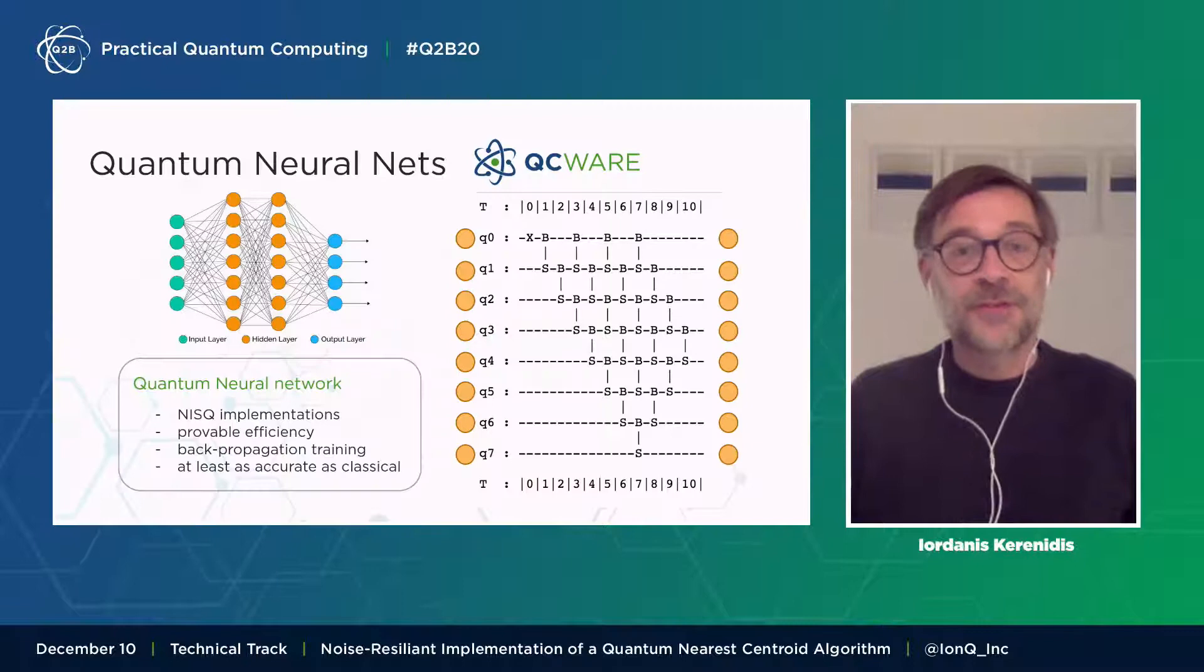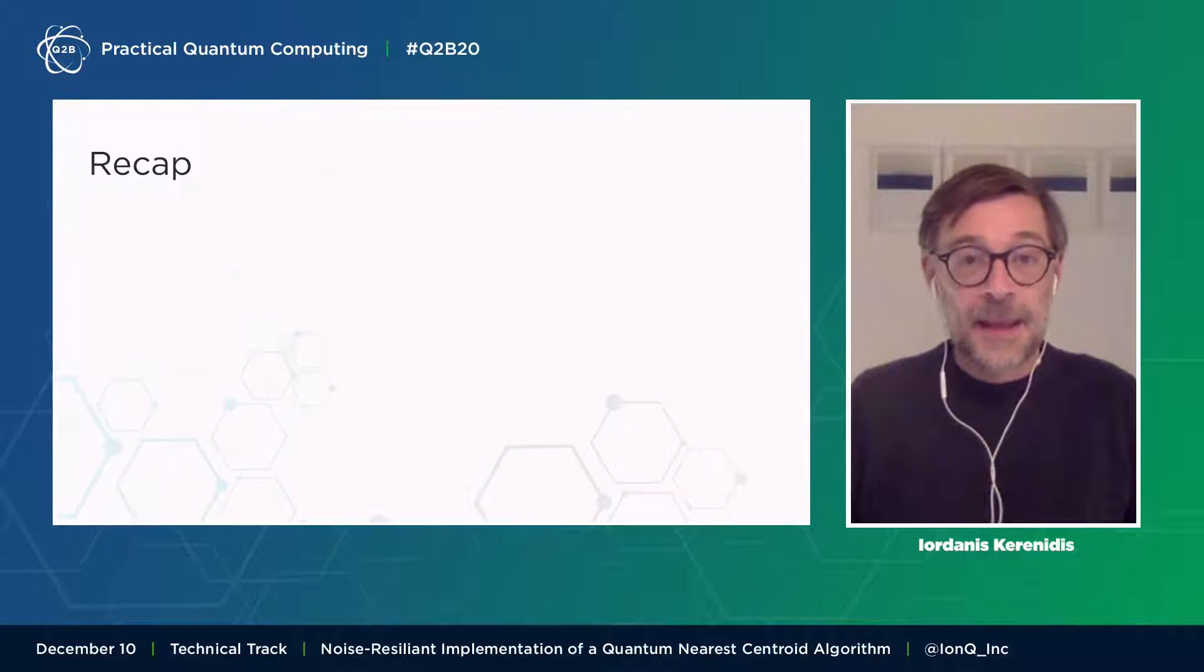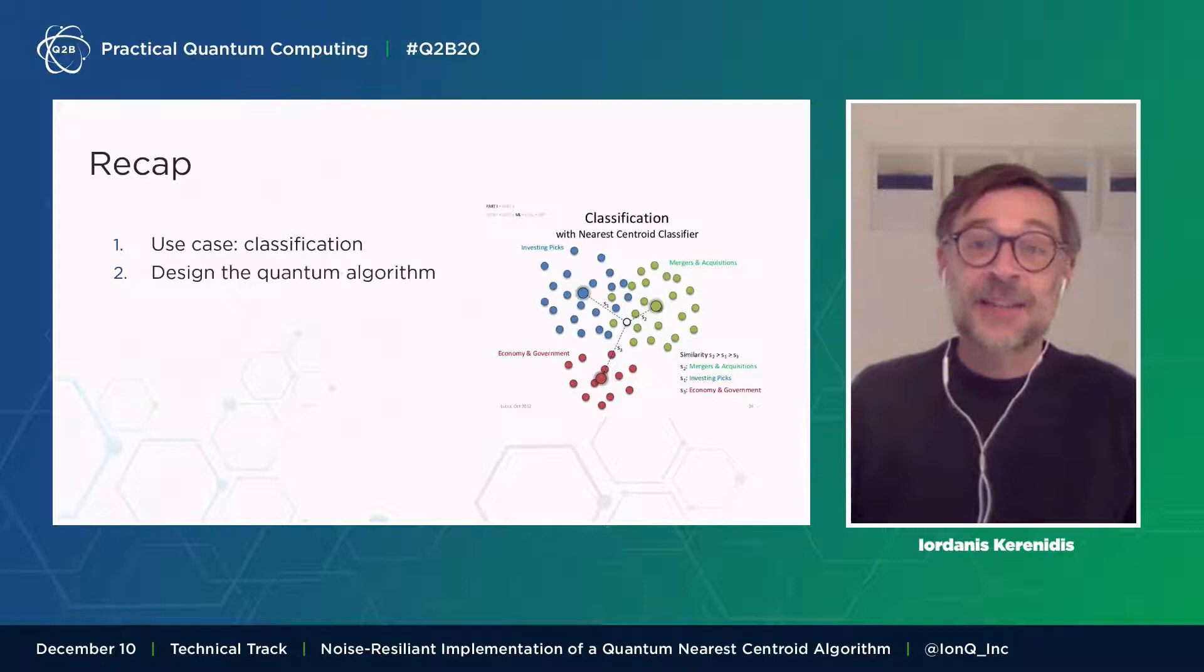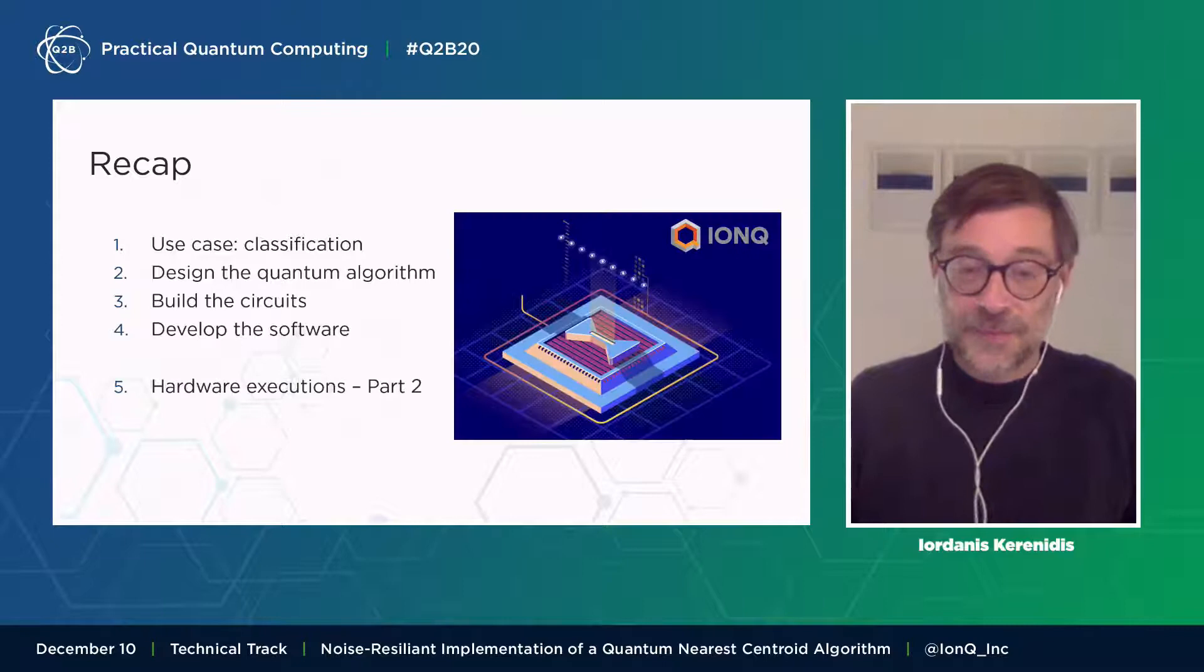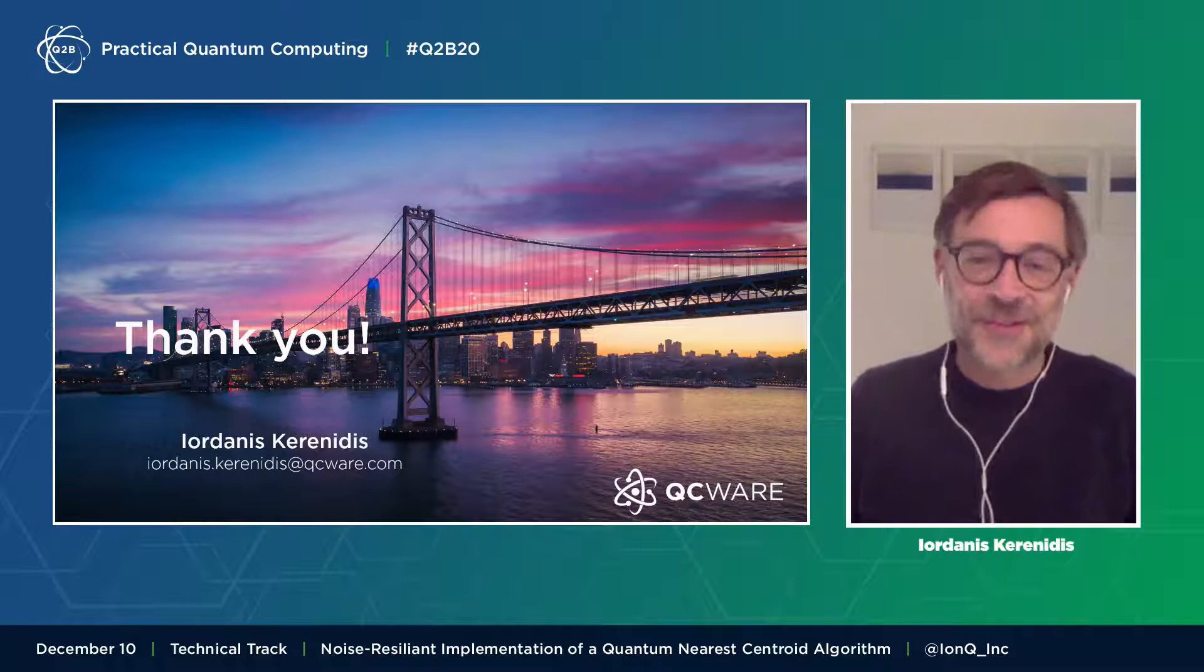Our technique can be used in other applications, not only classification. For example, we can use them to define neural networks that are advanced risk, but also have provable guarantees of performance. We can use them for regression and for clustering. And in order to recap and move on to the second part of the talk, what we saw here is that first we defined our use case and it was classification. Second, we designed our quantum algorithm, the quantum nearest centroid algorithm. Then we built the quantum circuits for distance estimation and for loading the data. We developed the software. And now we are completely ready to start up hardware executions. And Sonika Jori will tell us about how we implemented this on the IonQ machines in the second part of the talk. Thank you very much.